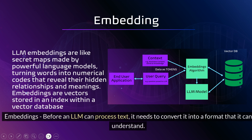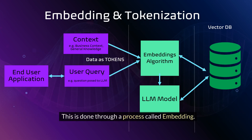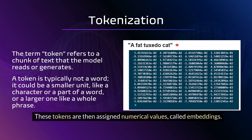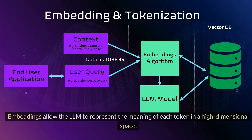Embeddings. Before an LLM can process text, it needs to convert it into a format that it can understand. This is done through a process called embedding. Tokenization breaks down text into individual units, such as words or subwords. These tokens are then assigned numerical values, called embeddings. Embeddings allow the LLM to represent the meaning of each token in a high dimensional space.